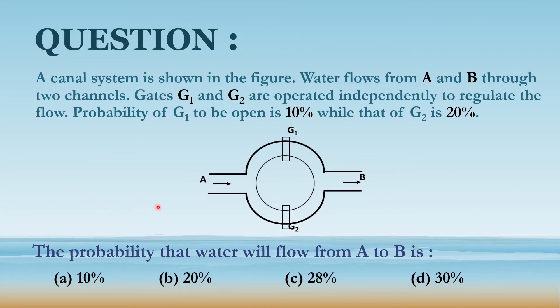A canal system is shown in the figure. Water flows from A and B through two channels. Gates G1 and G2 are operated independently to regulate the flow. Probability of G1 to be open is 10% while that of G2 is 20%.